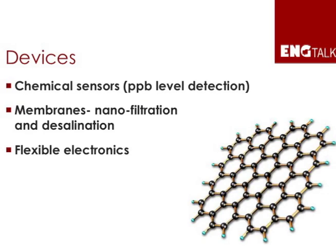For devices, the first thing we looked at was sensors. Because every atom in graphene is a surface atom, you get an enormous surface area. If anything sticks to the graphene sheet — for example, a gas species — it changes the way electrons move in graphene. Using this principle, we can get an extremely sensitive gas sensing device, sensing down to the parts per billion level. We've also exploited graphene's impermeability: even a proton cannot pass through graphene, but if we engineer sub-nanometer size holes in the sheet, we can pass water while blocking salts.